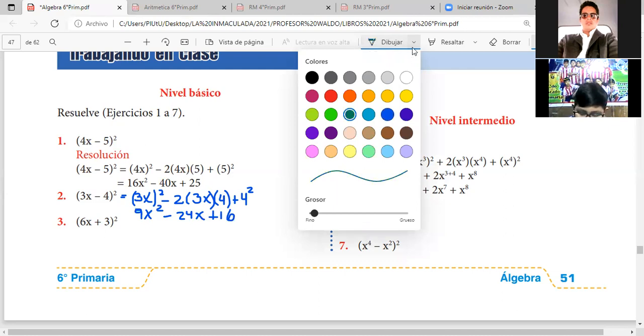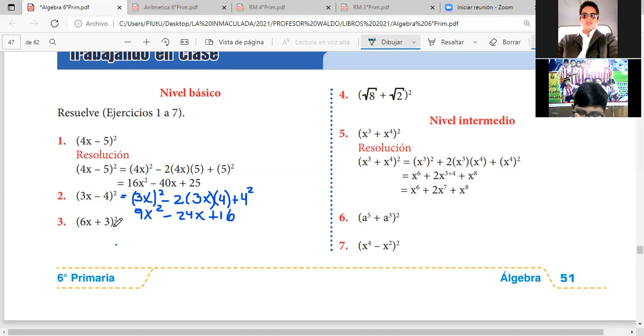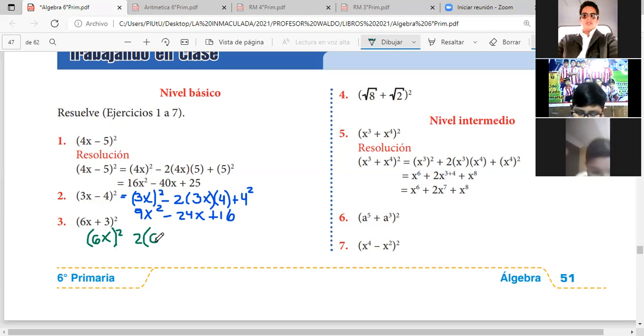Problema número 3. Tenemos aquí el primero elevado al cuadrado, 2 multiplicando al primero, multiplicando a 3, y el segundo elevado al cuadrado. Como es una suma, todos son positivos.